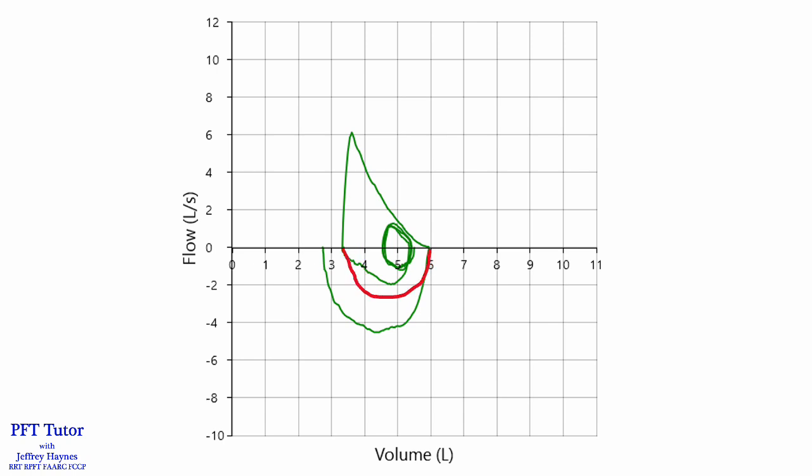You could also have a submaximal inhalation error with a perfectly shaped flow volume loop as shown here. In the red tracing, the inspired loop is not full, but it just so happens to connect with the expiratory loop, giving you the impression that the patient inhaled fully when they really didn't.